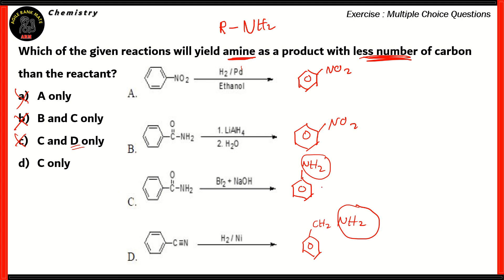So, that means equation number C has to be the right one, because over here, you have seven carbons on the reactant. However, there are only six carbons in the product. There's only the benzene ring. The CO has been removed. So, therefore, option D, C only, turns out to be the right equation. So, which of the given reactions will yield amine as a product with less number of carbon than the reactant? That is reaction number C. And this reaction is actually called Hoffman bromamide reaction.